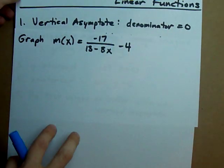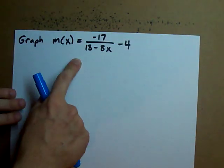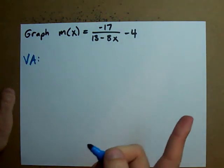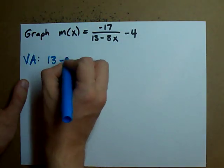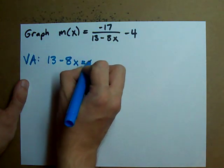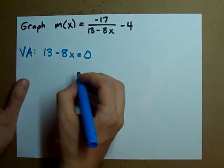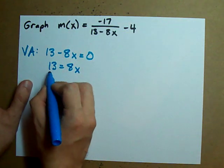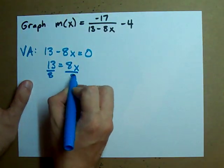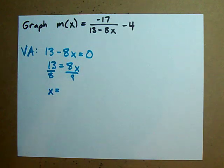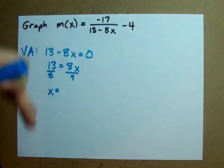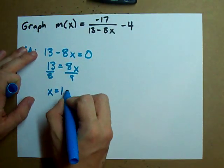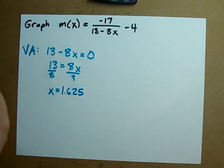Find the vertical asymptote by setting the denominator equal to zero. The denominator is 13 minus 8x equals zero. This is pretty easy to solve: 13 equals 8x, so divide both sides by 8. You get 13 divided by 8, which according to my calculator turns out to be 1.625. There's your vertical asymptote.